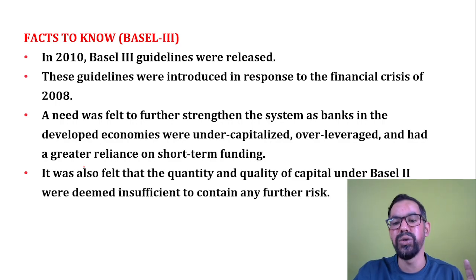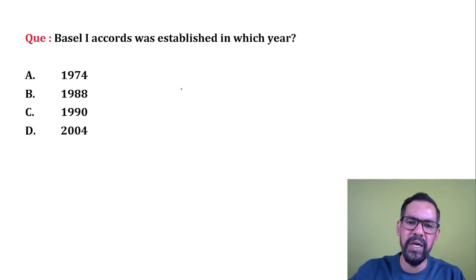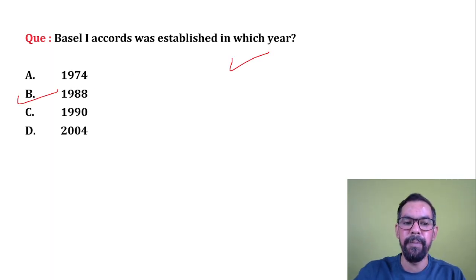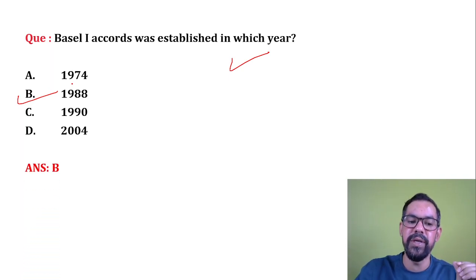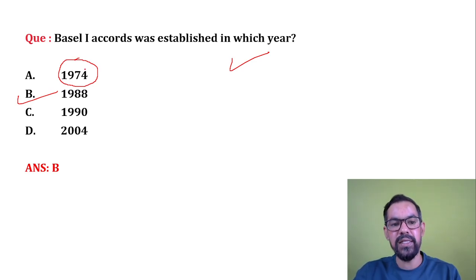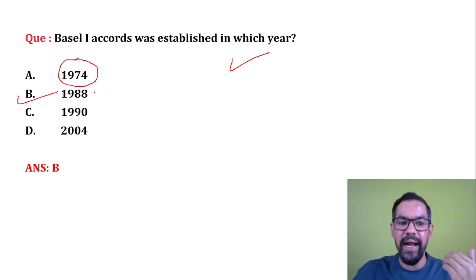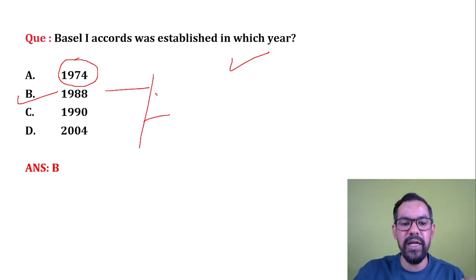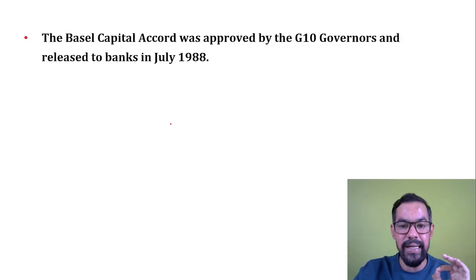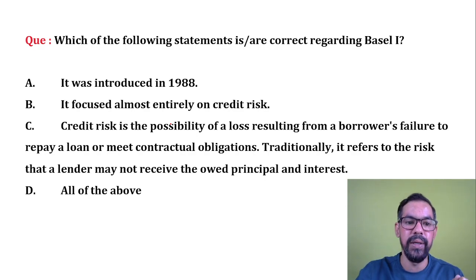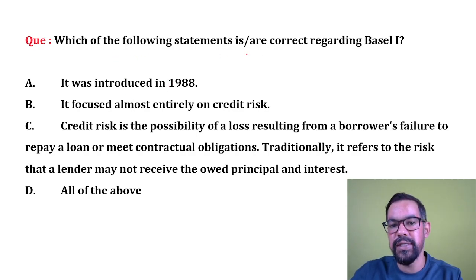Next question: Basel 1 accord was established in which year? The correct answer is 1988. BCBS was founded in 1974, and the first set of guidelines — called Basel 1 — were released in July 1988. India adopted Basel 1 in 1999.